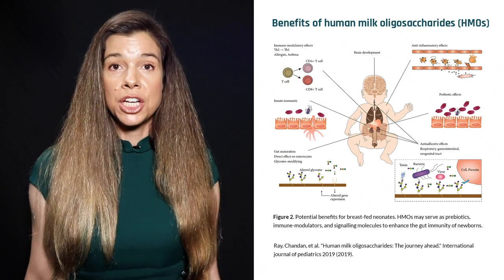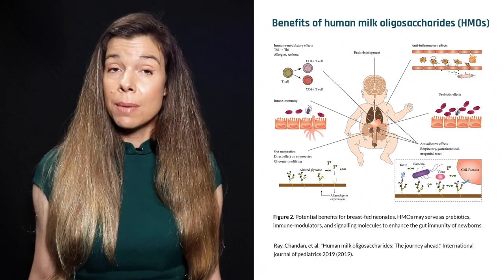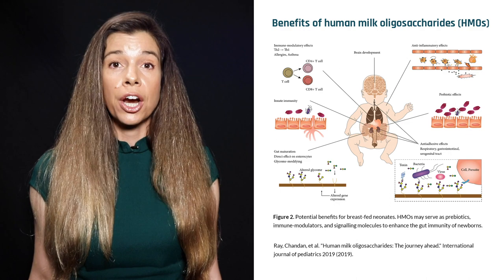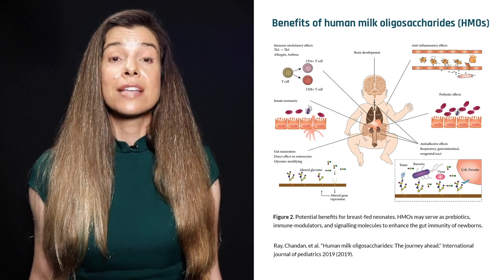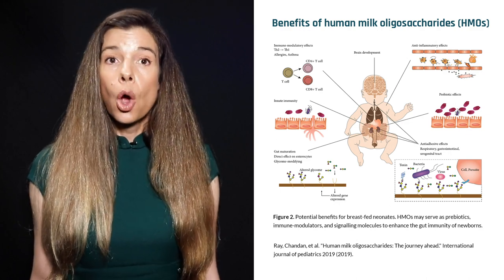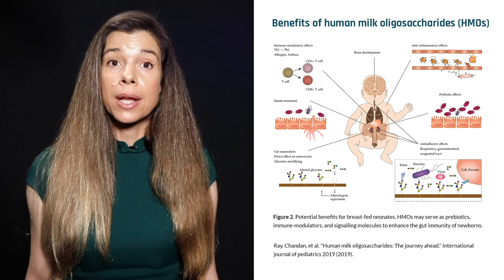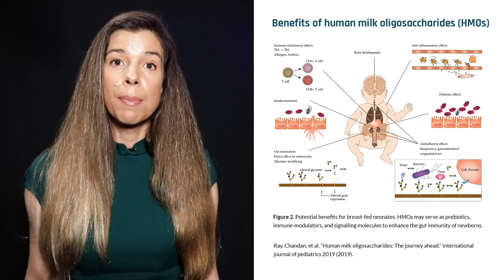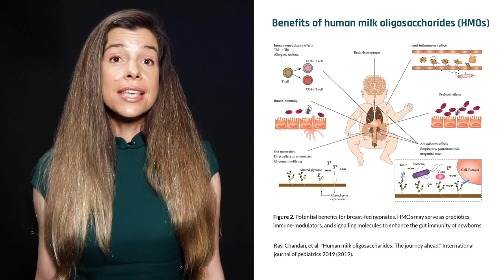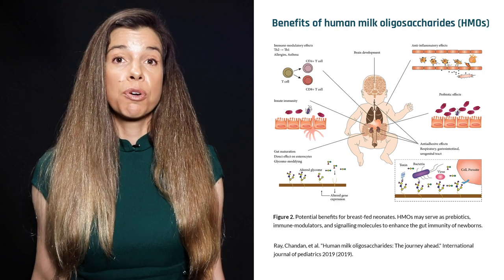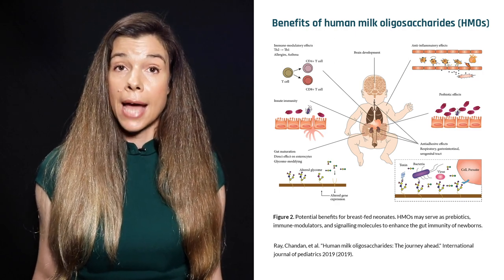These good bacteria then go on to help set up the immune system through the production of various signaling molecules, such as short-chain fatty acids, which are metabolites produced from the gut bacteria after they metabolize the HMOs. These substances prevent colonization of pathogenic bacteria in the gut.